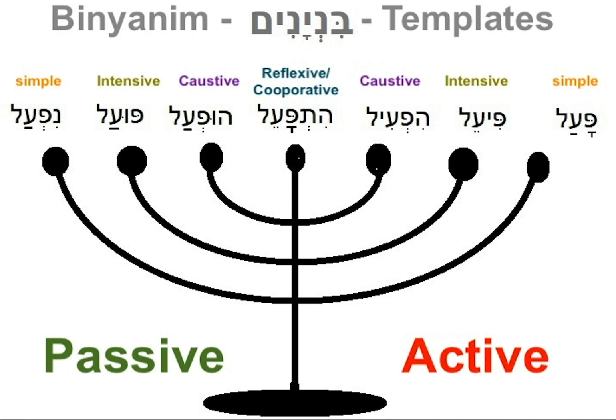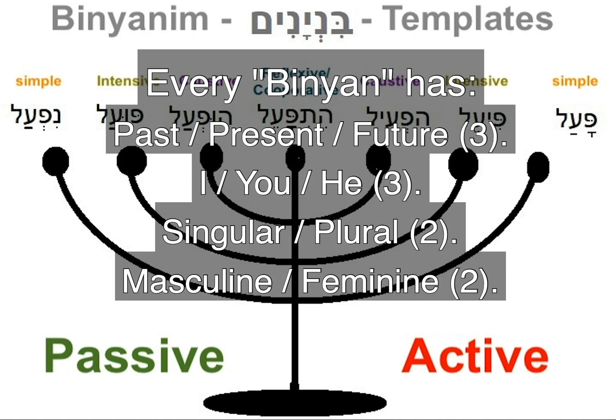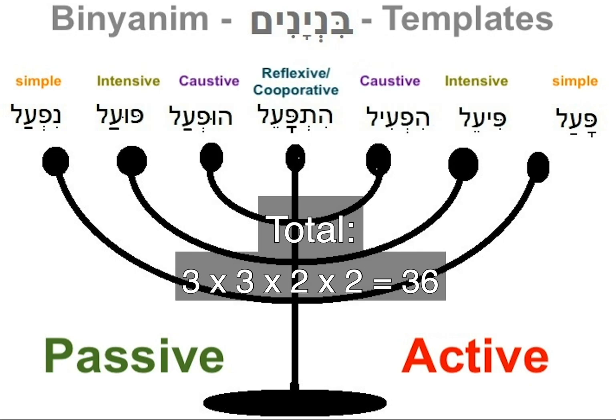That means, for example, that one Shoresh can be used in future, past, present, imperative, singular, plural, masculine, and feminine form — and give us 36 different conjugations. But usually, it's less.